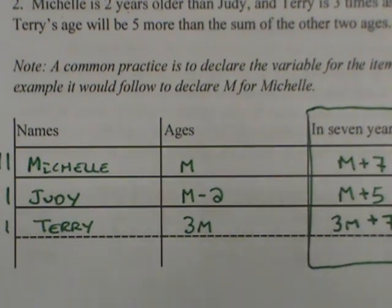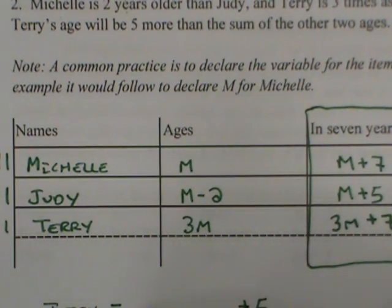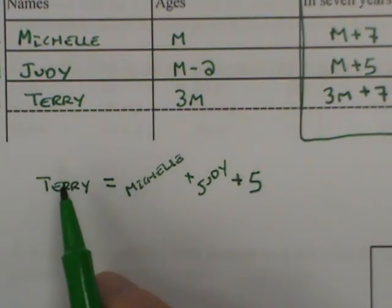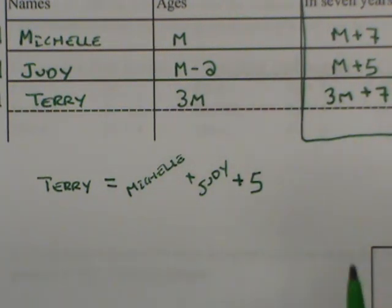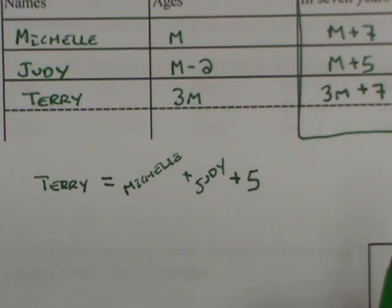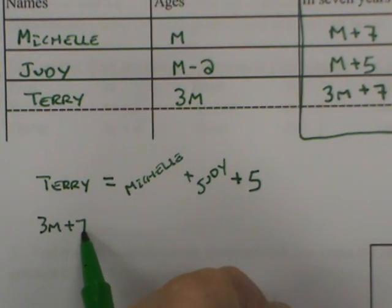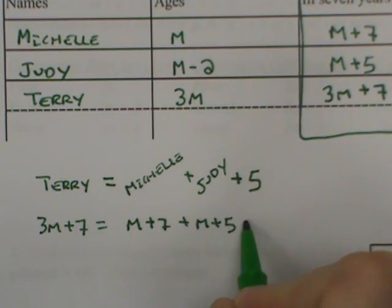Reading the ensuing phrase gives my equation. It says Terry's age — so I write Terry. "Will be" is future tense, meaning equals. "Five more than" — I add five. "Than the sum of the other two ages" — that would be Michelle plus Judy. So: Terry's age will be five more than the sum of the other two ages. Throwing in the algebraic expressions: three M plus seven equals M plus seven, plus M plus five, plus five.